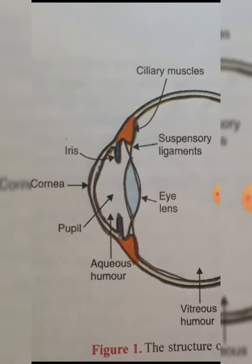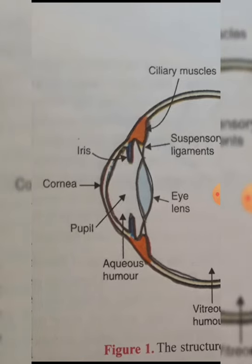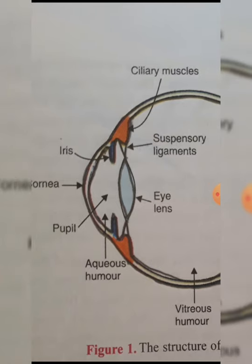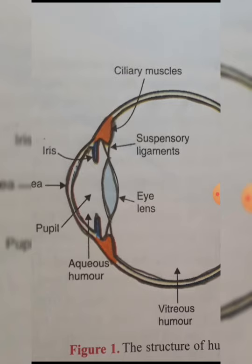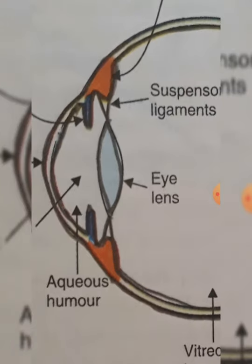Light enters this outer bulging part, then passes through the pupil — the hole in the middle of the iris — and the light rays fall on the eye lens. As you know, our eye lens is a convex lens.